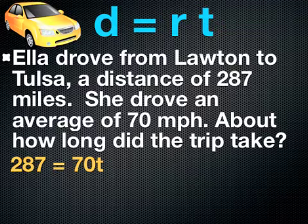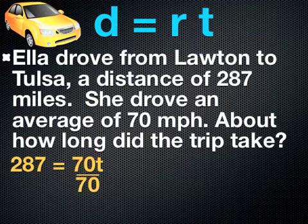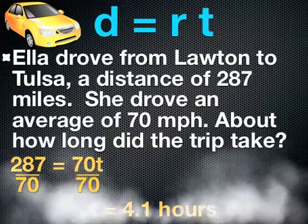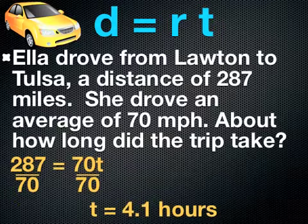I need to solve for my variable t, which means that I need to get rid of 70. This is the same as solving a one-step equation. Because we're multiplying 70 times t, I need to do the inverse of that, which means I need to divide by 70 on both sides of the equation. When I divide by 70, I'm going to find that t equals 4.1 hours.